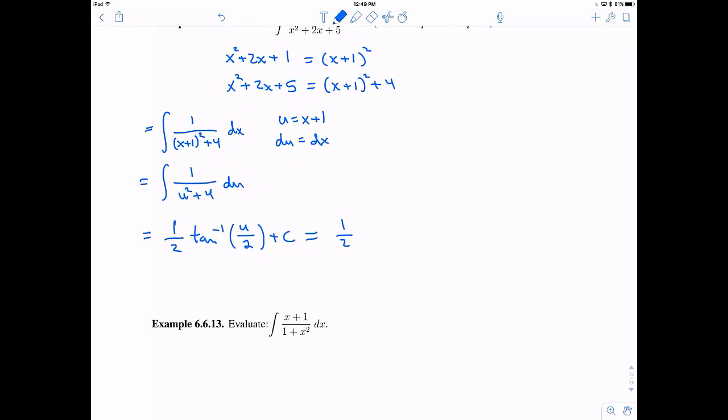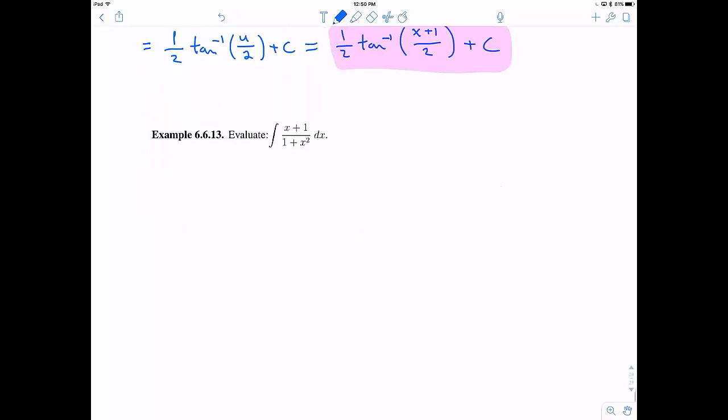And so therefore, we get 1 half tangent inverse of, and now instead of u, I'm plugging in x plus 1. And that's all there is to it. I mean, it's not at all obvious that completing the square would be such a good idea. So that's why we needed the hint. But keep this in mind as you continue to do your homework problems and quizzes and exams, things like this.